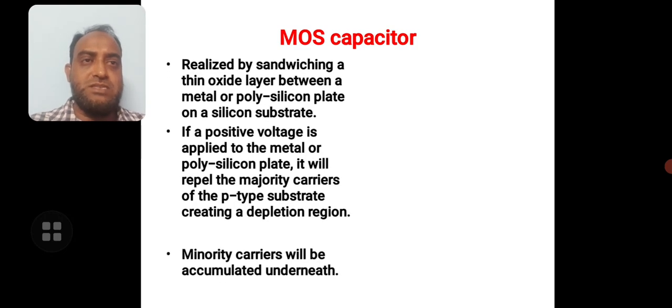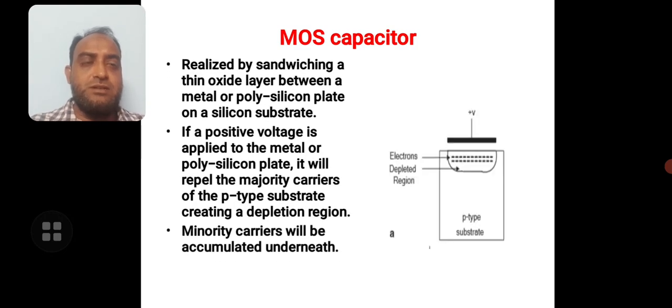Now the MOS capacitor can be realized like this: we'll have a polysilicon or metal gate on the above. On the bottom side, we'll have a channel. These upper conductor and bottom conductor are separated by the gate dielectric. So this structure is like a capacitor and we call it as a MOS capacitor or gate capacitor.